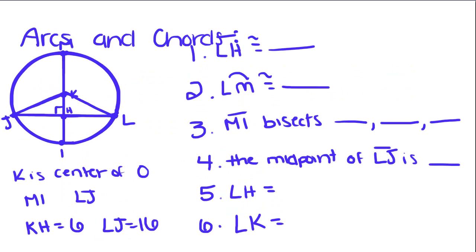Now we're going to do an example. We have this circle where K is the center of the circle. We're going to try and tell what kind of relationship MI has to JL. Well, since there's a right angle right here, that must mean that MI is perpendicular to LJ. This line right here. Because when they intersect, it forms a right angle.